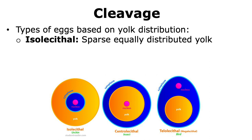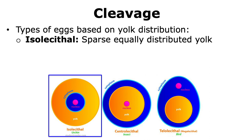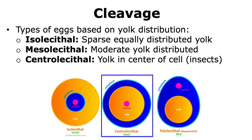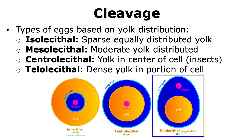Based on yolk distribution, eggs can be classified into different groups. Isolecithal eggs have very little yolk, if any, and what is present is equally distributed. Mesolecithal eggs normally have moderate yolk that is also distributed throughout the cell. Centrolecithal eggs have yolk present in the center of the cell, and there is usually quite a lot of it. Telolecithal eggs also have very dense yolk, but it is localized in a portion of the cell, as seen in the figure.